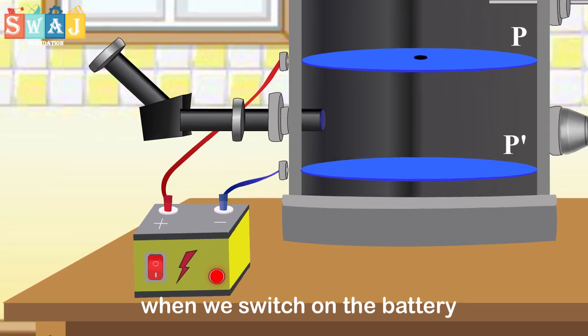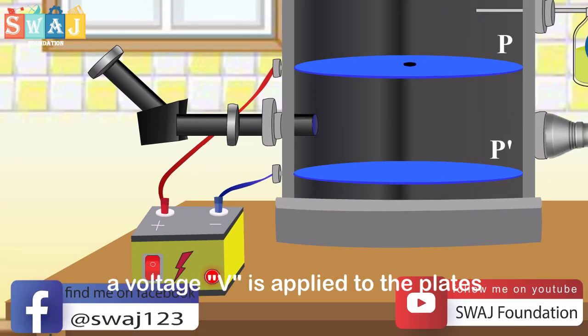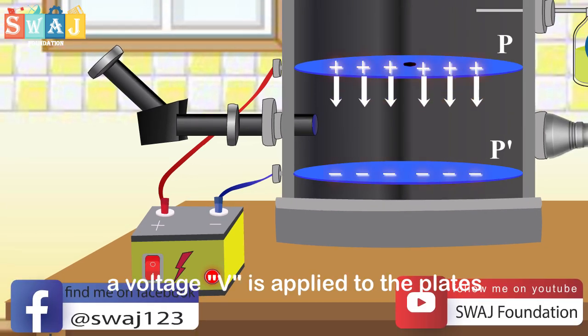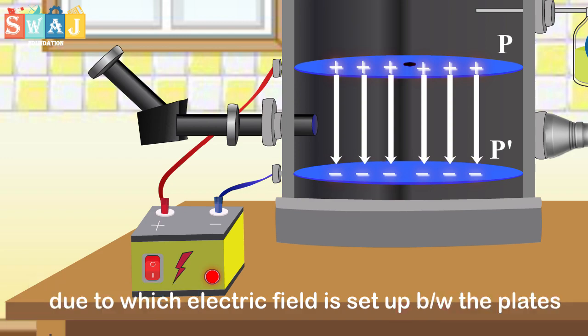When we switch on the battery, a voltage V is applied to the plates due to which the electric field is set up between the plates.